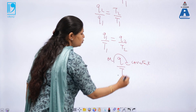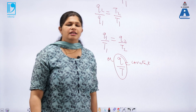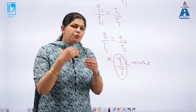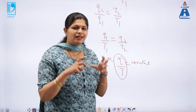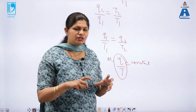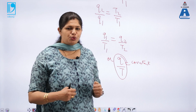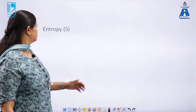So this Q by T factor is the factor which is responsible for the changes occurring in the heat engine. This property is called entropy. Before moving on to entropy, let us first see what are the statements of the second law of thermodynamics.